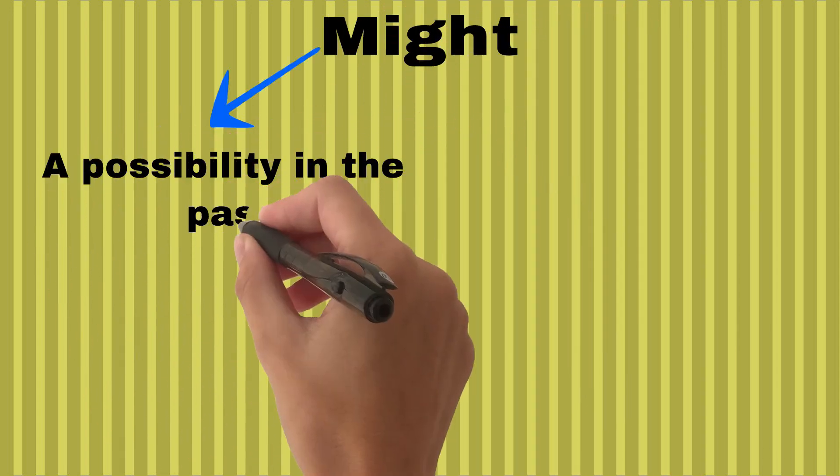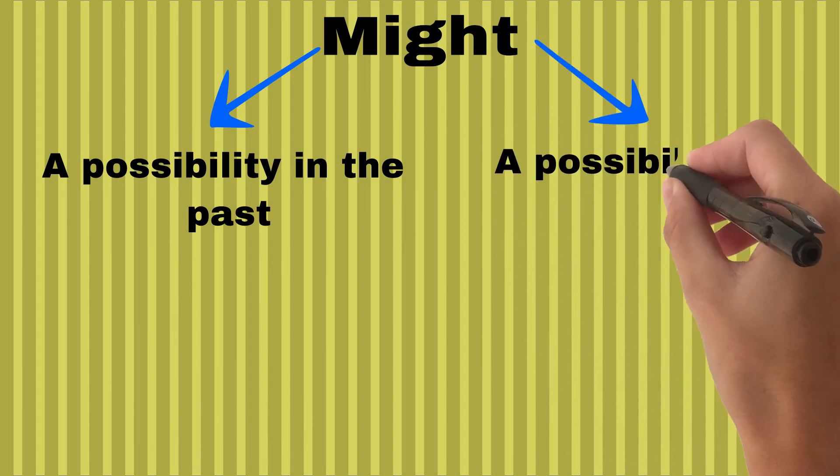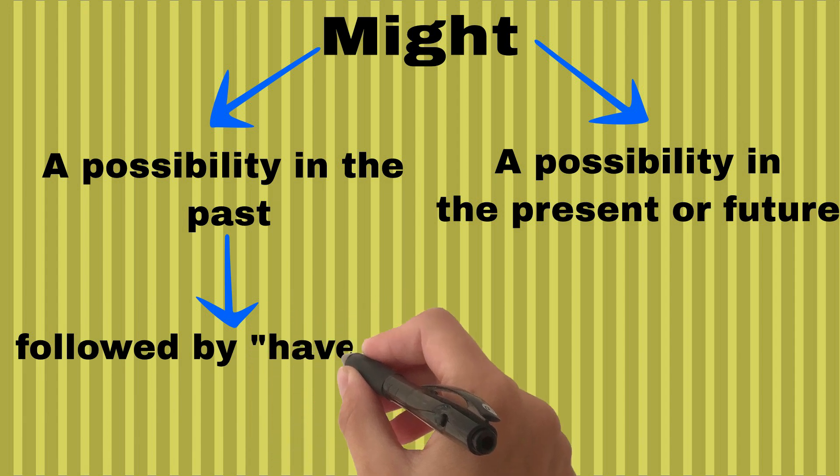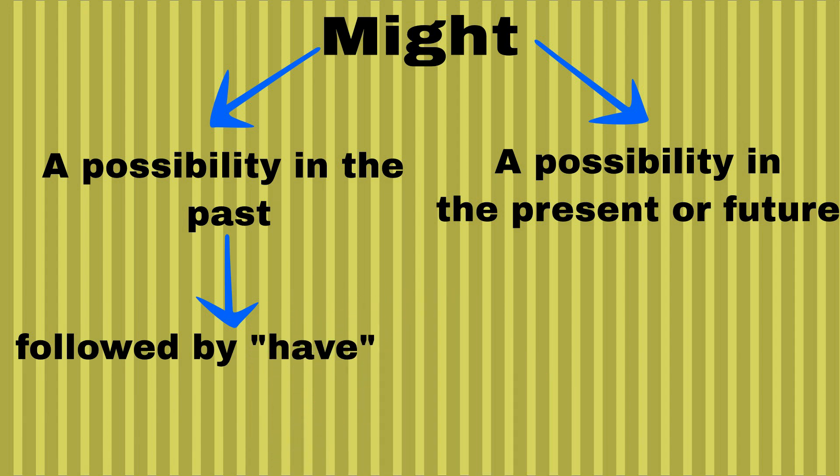Might can express a possibility in the past, a possibility in the present or future. In past, might is followed by have. In present or future, might is followed by be.